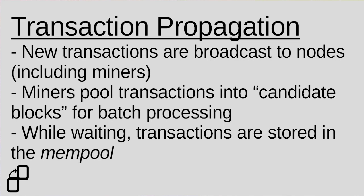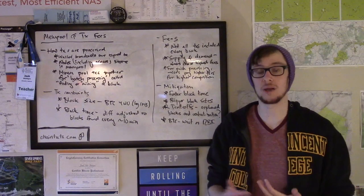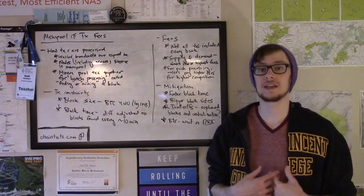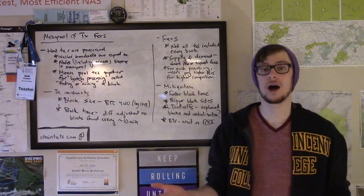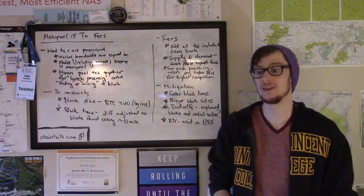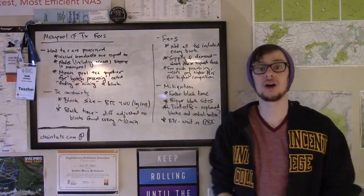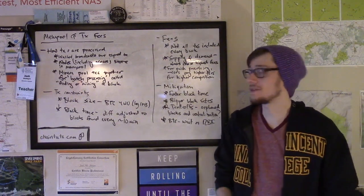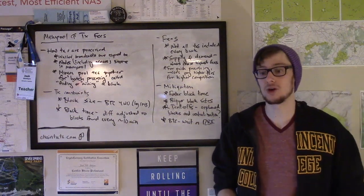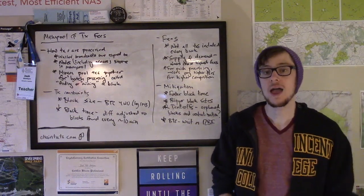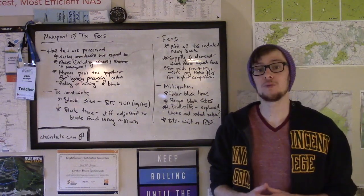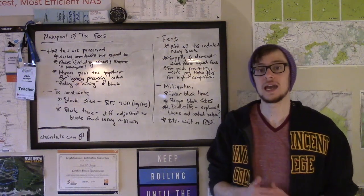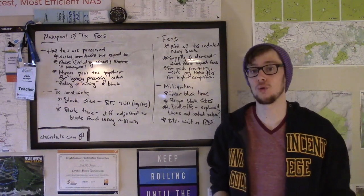Your wallet broadcasts that transaction out to other nodes on the network. This occurs in Bitcoin using a flood model — your wallet sends it out to its nearest nodes, and those nodes propagate it out to other nodes they're connected to. Importantly, this does include mining nodes. These nodes put all of the unprocessed transactions into a data structure called the mempool.